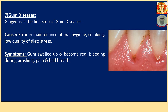Number 6: Gum Diseases. Gingivitis is the first type of gum disease. Cause: Error in maintenance of oral hygiene, smoking, low quality of diet, and stress. Symptoms: Gum swells up and becomes red, bleeding during brushing, pain, and bad breath.